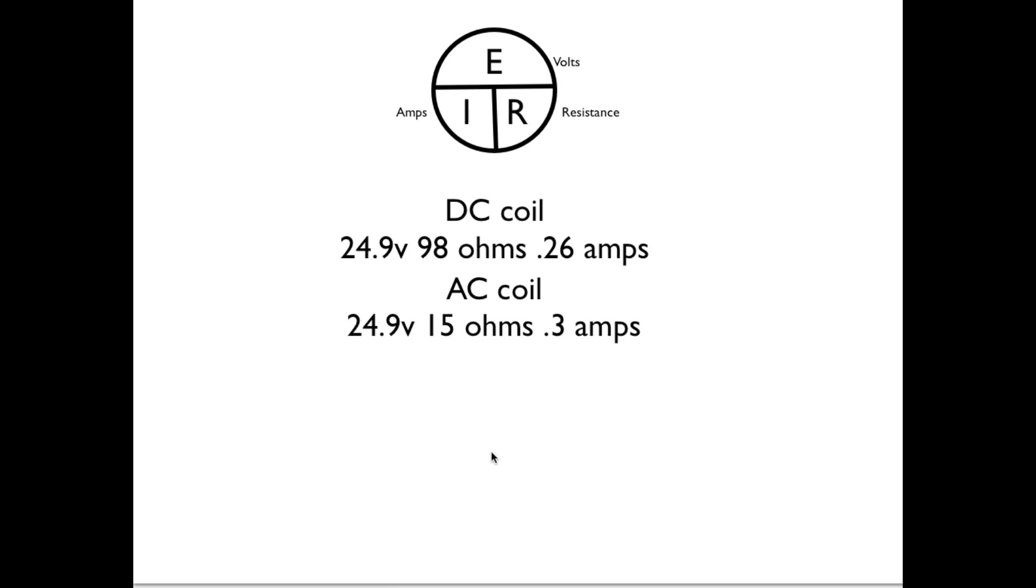Here's the EIR formula and the numbers we got off of the coils. The 24.9 volts, 98 ohms, and 0.26 amps. The 24.9 is going to go up here where the E is for electromotive force, the 98 ohms goes over here for resistance, and the 0.26 amps goes over here on the amperage side. If you do these calculations, like if you were to take the resistance and multiply it times the amperage, then you should equal volts. These things never usually come out exactly perfect but they're pretty close.